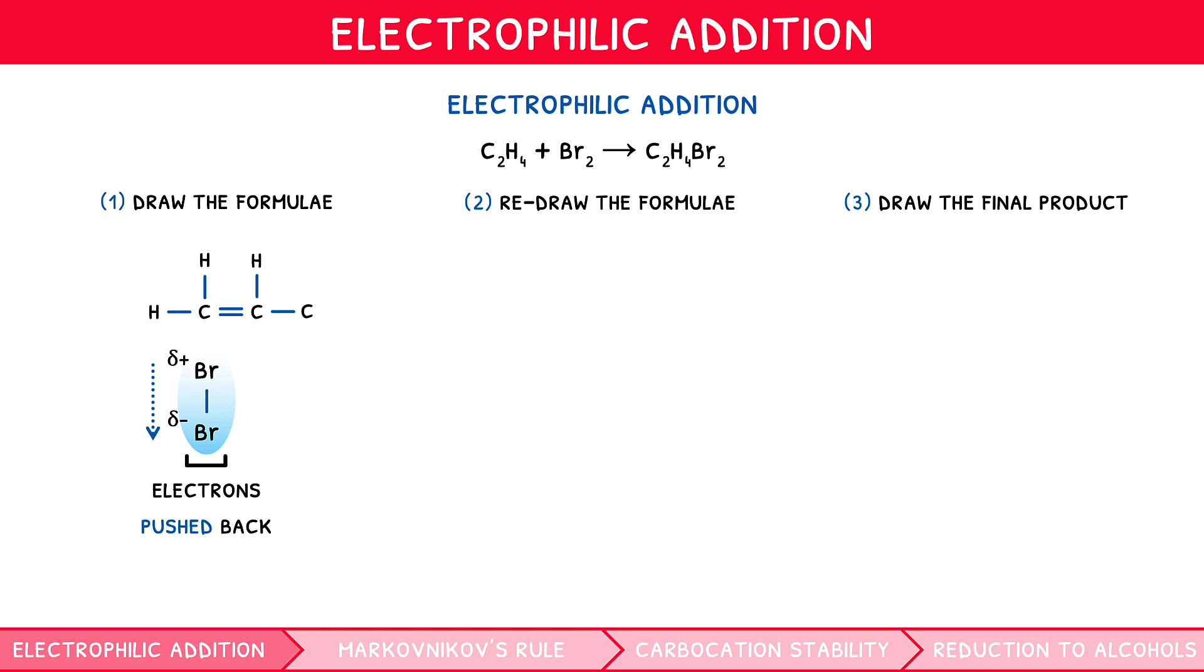Aside from this initial stage, the reaction mechanism remains identical, i.e. we would show the attraction of the electrophile, then the formation of the carbocation and halide ion, and finally the formation of the end product.